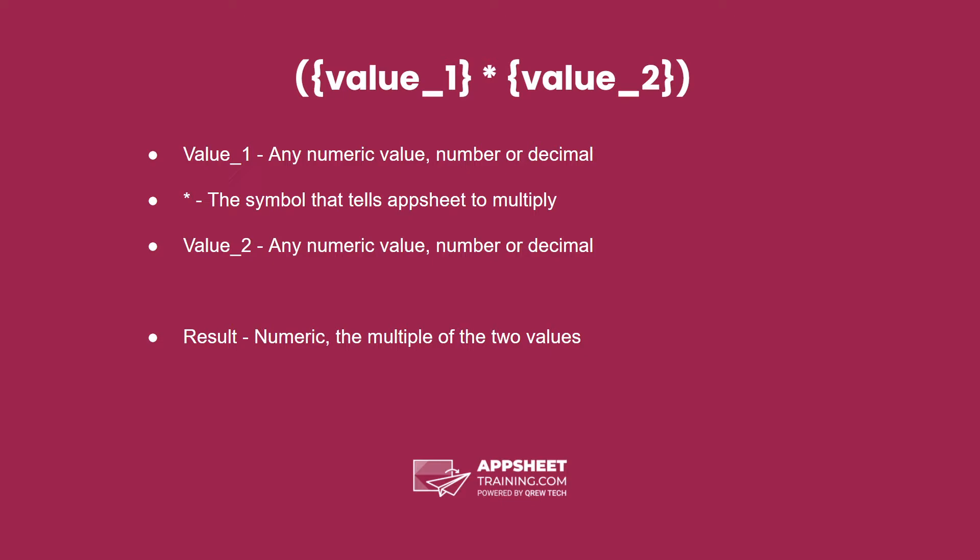The result is the multiple of these two values and the resulting type will depend on the types of the two values you gave. It'll be a number if they were both numbers or it'll be a decimal if at least one of them was a decimal.